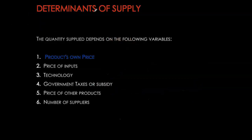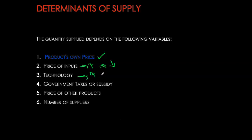What determines our quantity supplied? I would always want to sell more if the price of what I'm selling goes up. If my input prices — the raw materials that go into the production process — rise, I would want to sell less. If technology improves and enhances my capability to produce more with the same inputs, I'm able to sell more. Government taxes or subsidies will also affect my overall willingness to sell, as will prices of other related products and the number of sellers in the market.